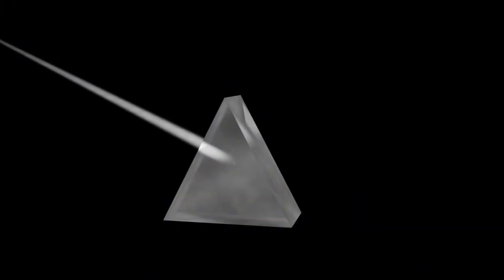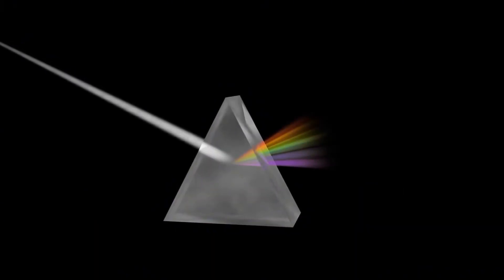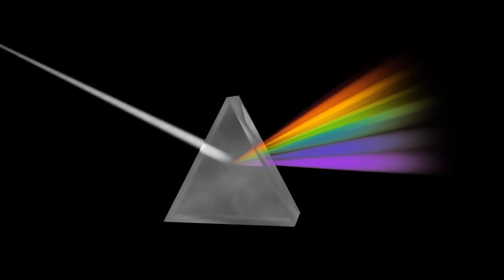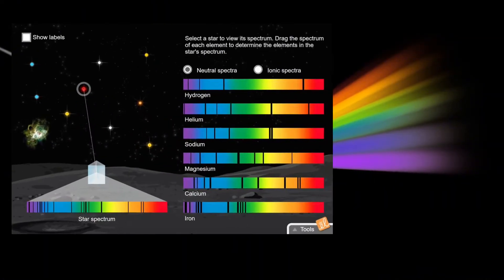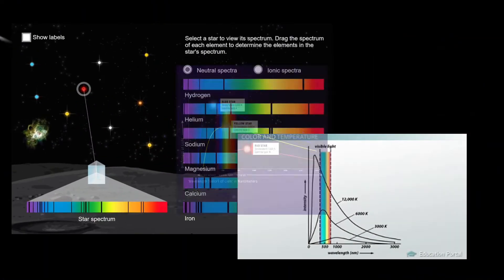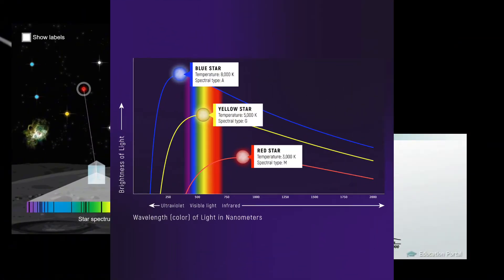Then we have spectrographs. By breaking down light into its constituent colors, spectrographs unveil the chemical composition, temperature, and velocity of celestial objects.